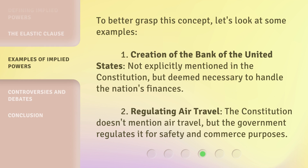To better grasp this concept, let's look at some examples. First, the creation of the Bank of the United States — not explicitly mentioned in the Constitution, but deemed necessary to handle the nation's finances. Second, regulating air travel: the Constitution doesn't mention air travel, but the government regulates it for safety and commerce purposes.